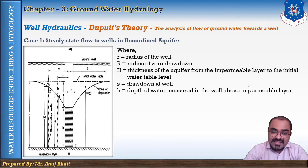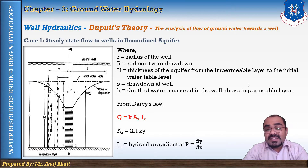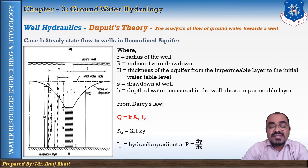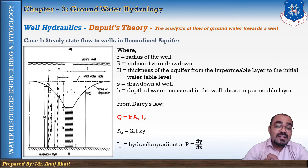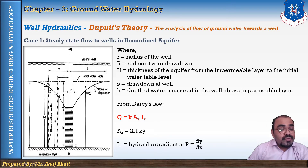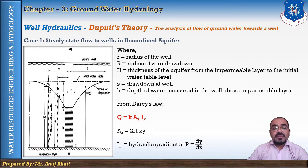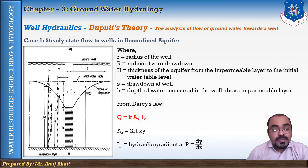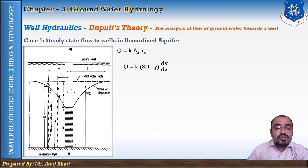Since flow is laminar, we apply Darcy's law: Q = k × A × i, where A is the cross-sectional area and i is the hydraulic gradient (dy/dx). At a point, the cross-sectional area A = 2πxy and i = dy/dx, so Q = k × 2πxy × (dy/dx). Separating variables: Q × (dx/x) = 2πk × y × dy.